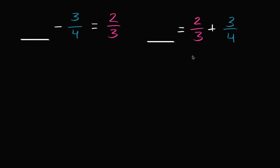What is 2/3 plus 3/4 going to be? I can rewrite both of these fractions so they have a common denominator. What's the least common multiple of 3 and 4? We look at multiples of 4 and find one that's divisible by 3. 4 isn't divisible by 3. 8 isn't divisible by 3. 12 is divisible by 3 — in fact, 3 times 4 is 12. So we can rewrite both as something over 12. To go from 3 to 12, multiply by 4, so 2 times 4 is 8. So 2/3 is the same thing as 8/12.